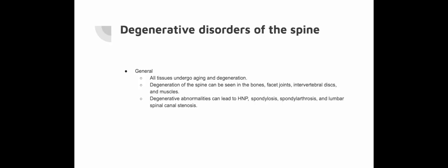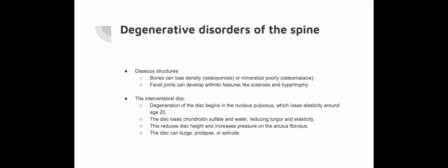The next chapter covers degenerative disorders of the spine. Aging of the spine manifests in various degenerative changes, including osseous alterations, facet joint osteoarthritis, intervertebral disc degeneration and muscle atrophy. These changes can lead to conditions like hernia nuclei pulposi, spondylosis, spondyloarthrosis and lumbar spinal canal stenosis. Aging of spinal bones can also lead to osteoporosis and osteomalacia. The facet joints can show signs of osteoarthritis such as sclerosis and hypertrophy, which can narrow the spinal canal.